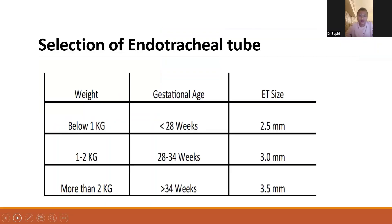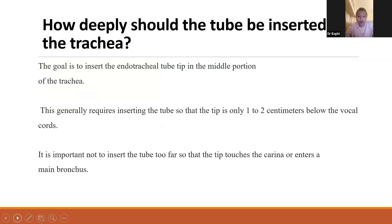How do we select the size of an endotracheal tube? We select it based on the weight of the baby and the gestational age. Below 1 kg, roughly less than 28 weeks, we use 2.5 mm. From 1 to 2 kg, 28 to 34 weeks, we use 3 mm. And more than 2 kg, that is more than 34 weeks, we use 3.5 mm.